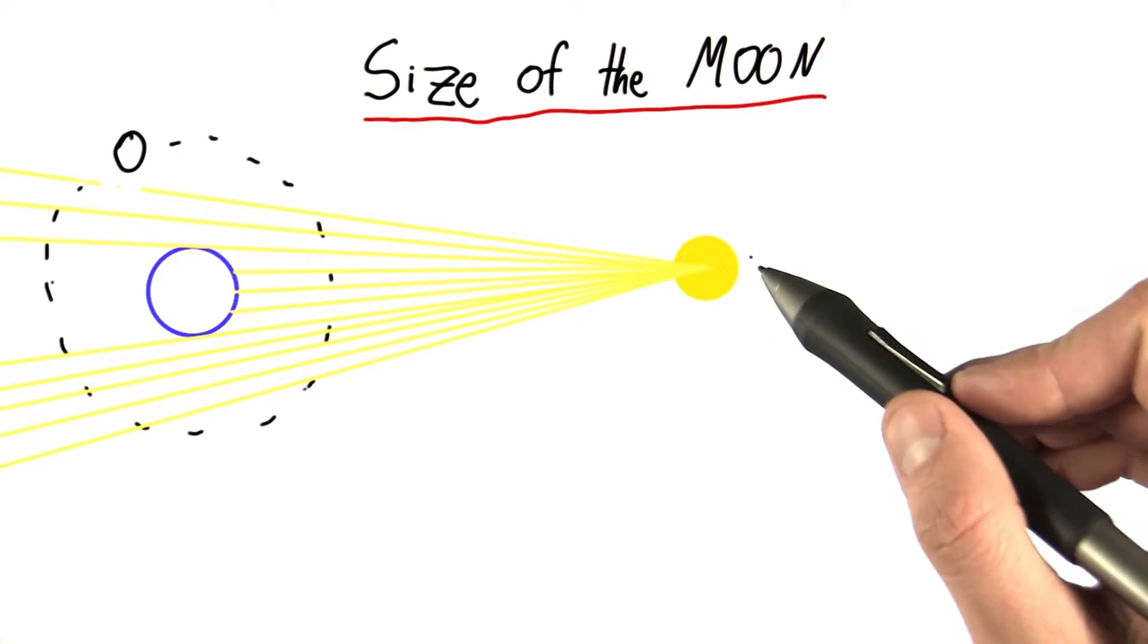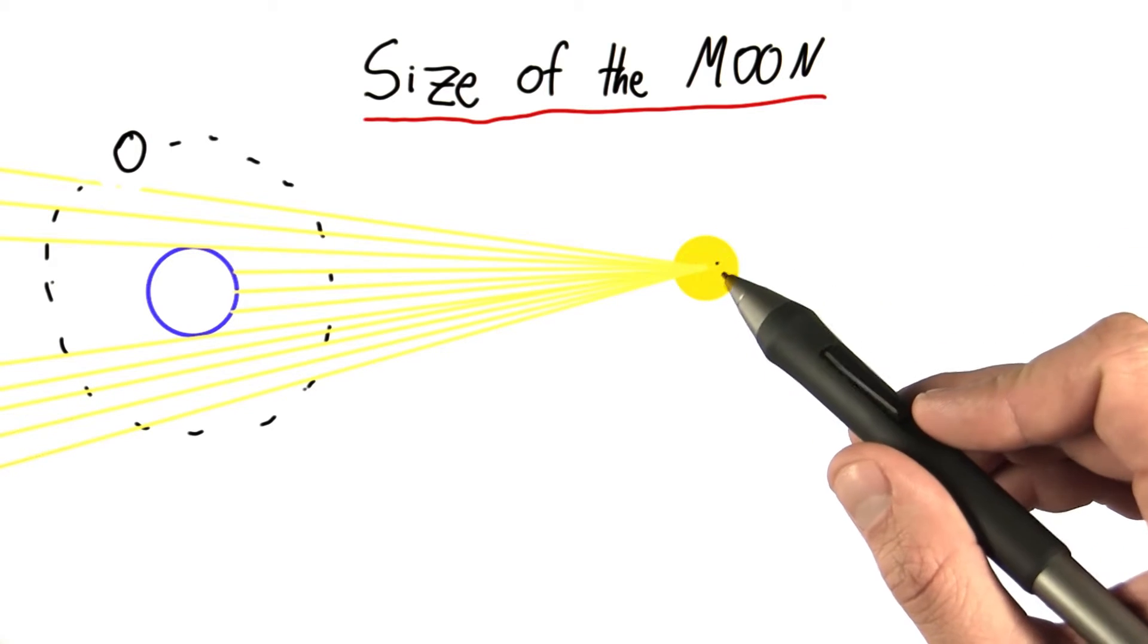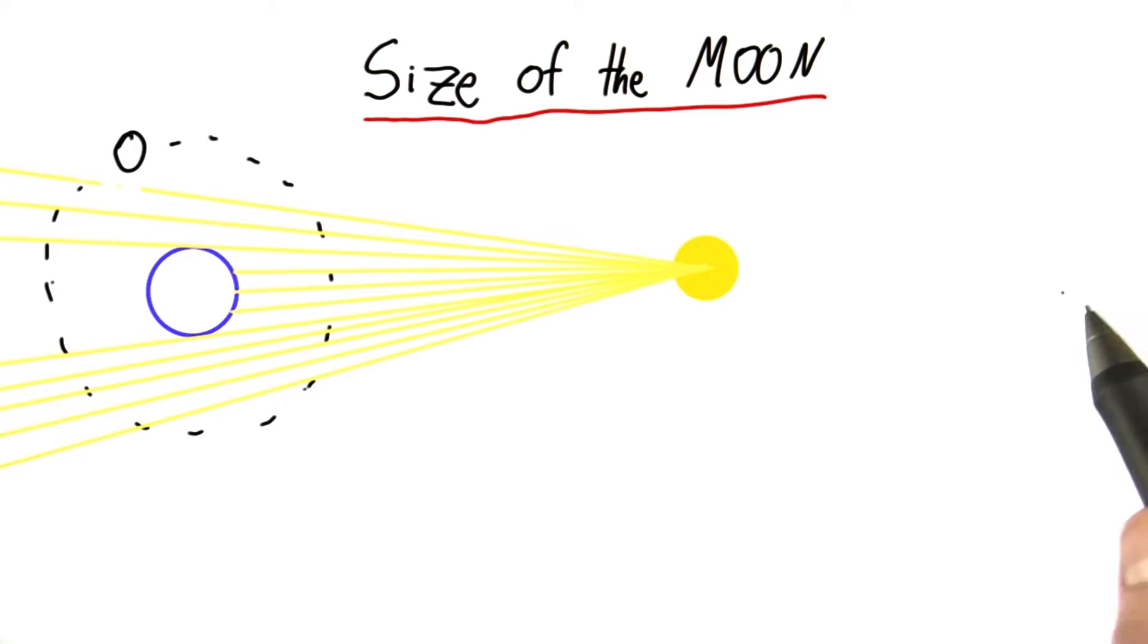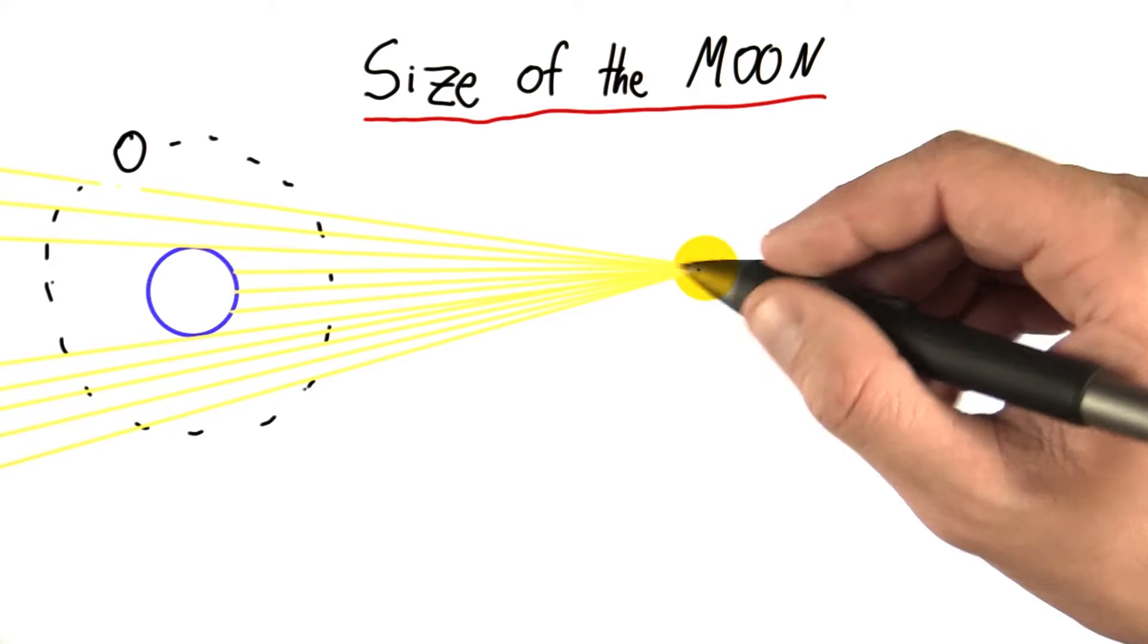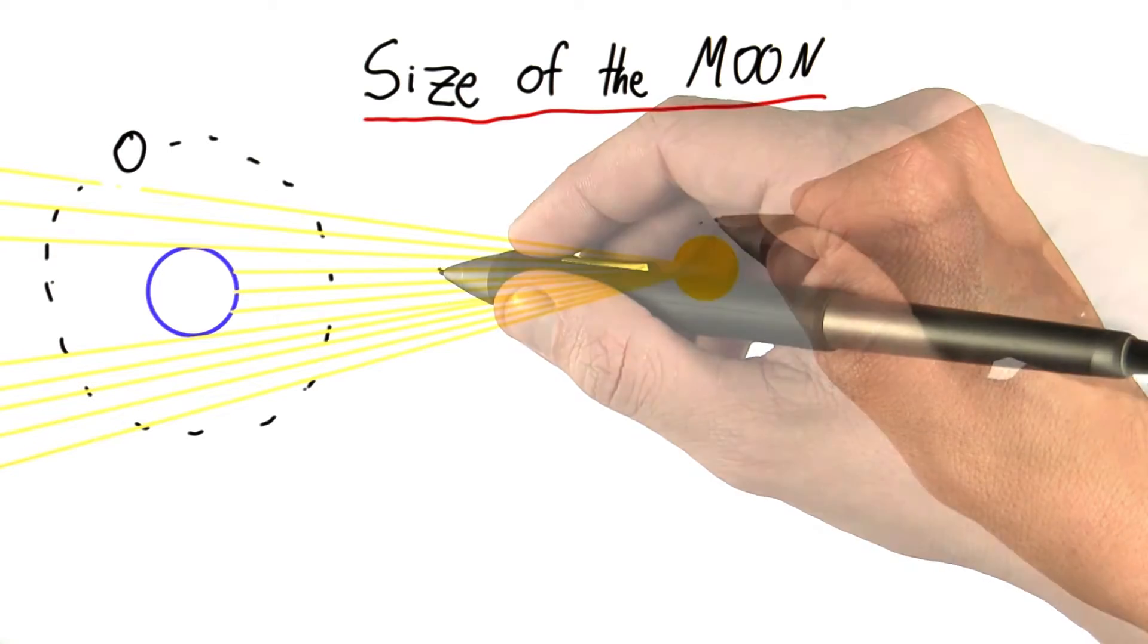In fact, the sun should be way, way, way bigger and way, way, way further off the screen. In fact, if I drew this right, these rays would all be more or less completely parallel.